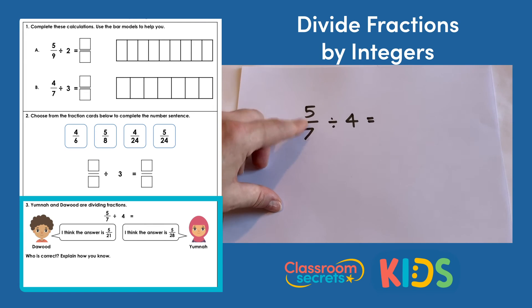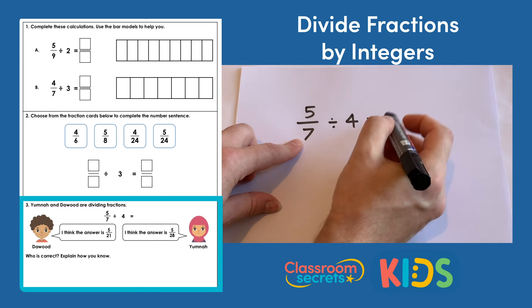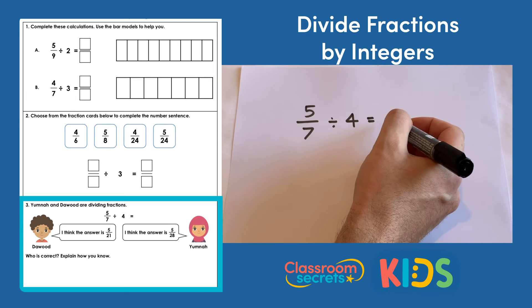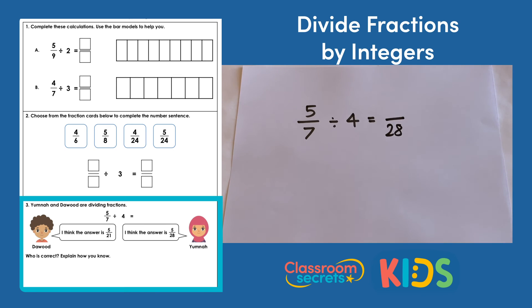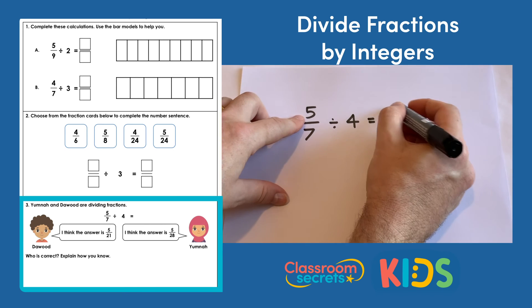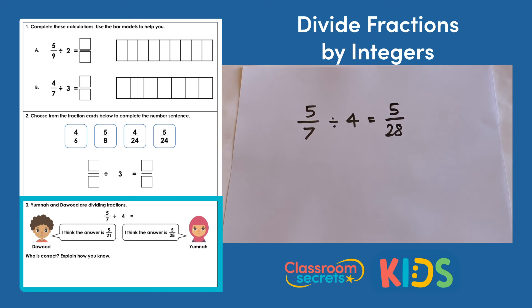So if we have 5 sevenths divided by 4. So we'll be looking at 5 of those sevenths but all the sevenths are going to be divided into 4 equal parts. So out of the whole there, there'd be 28 equal parts. We'll be looking at 5 of them. So that'll be 5 over 28. So looking at the two statements that the children made, it was Yumna who said I think the answer is 5 twenty-eighths. So it would be her who would be correct.